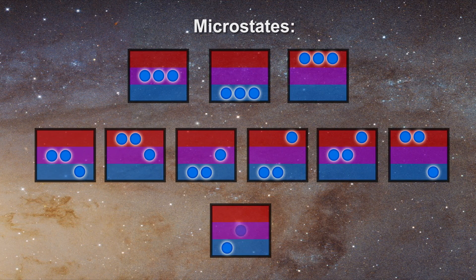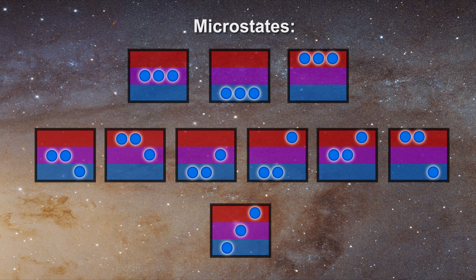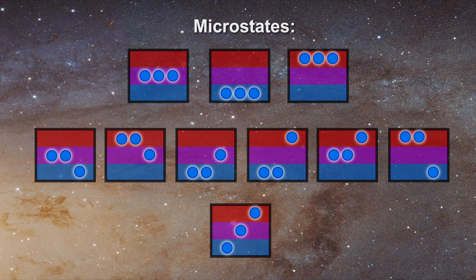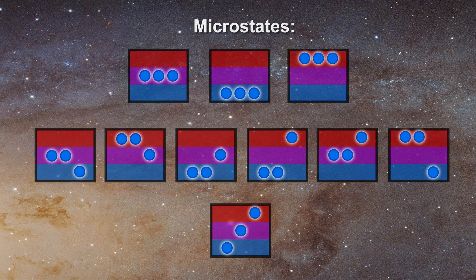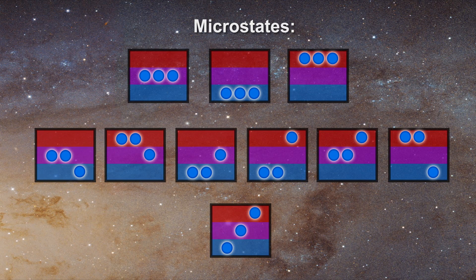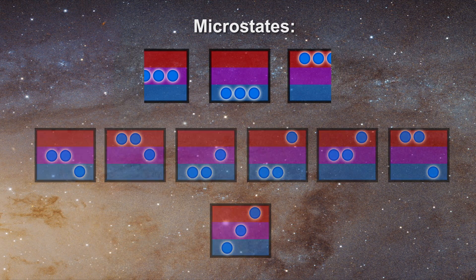Finally, you could place a single atom in each energy level. In total, you would have 10 possible microstates. When absolute zero is reached, all of the atoms must be in the lowest microstate, resulting in a net entropy of zero.